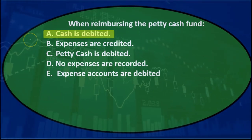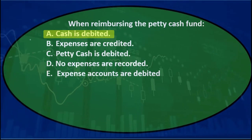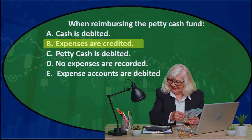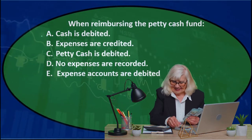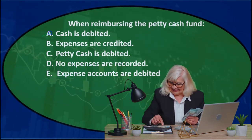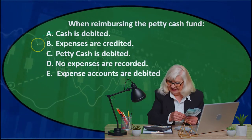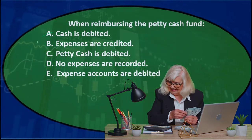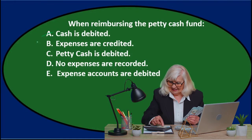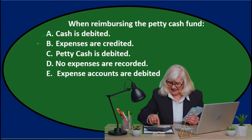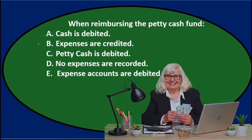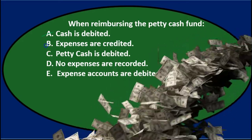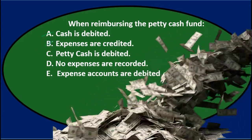When reimbursing the petty cash fund, A says cash is debited. When we reimburse it, we're actually taking money out of the checking account, so cash would be credited — not debited. So it's not A. B says expenses are credited. Expenses are debit-balance accounts and only go up in the debit direction, so we're not going to credit expenses. If we do anything, we'd debit expenses. So cross that out.